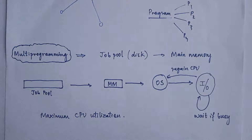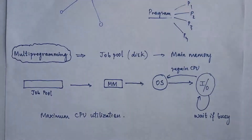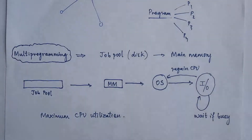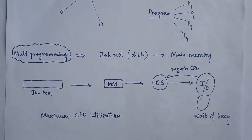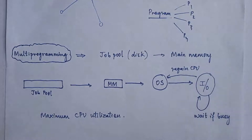The main idea behind multiprogramming is that the CPU should never sit idle. As long as there are processes which demand CPU, the CPU must never sit idle. That is the main concept of multiprogramming.